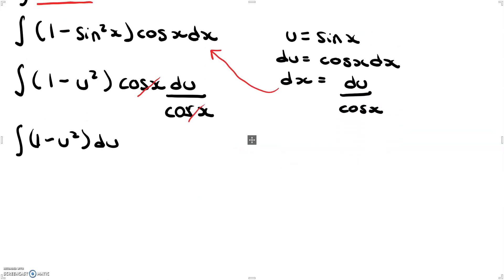Now if we go ahead and evaluate this integral, we get 1 will become u and then u squared will become u to the 3 divided by 3 plus c.